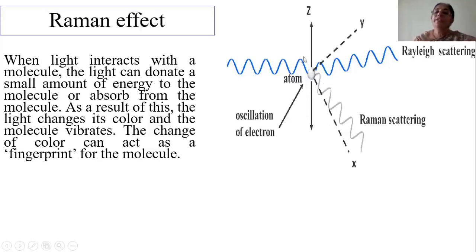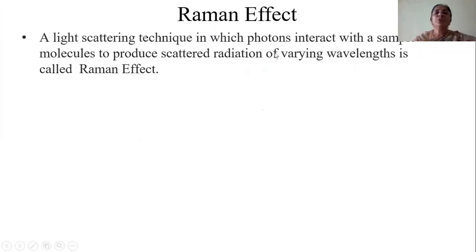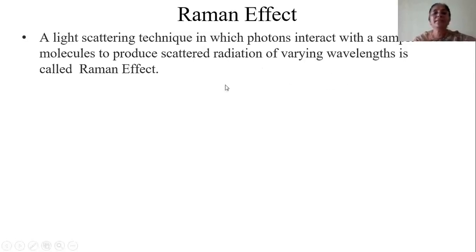If you study the scattered light — what is the change in its color and what is the change in its frequency — we will be able to predict many things about the molecule: how many atoms make it up, how the atoms are bonded together, and how the molecules are vibrating. In simple terms, the Raman Effect is a light scattering technique in which photons interact with the molecules of the substance to produce scattered radiation of varying wavelengths. If there is no change in frequency or wavelength, the scattering becomes Rayleigh scattering. When there is a change in frequency or wavelength, the same effect becomes the Raman Effect.